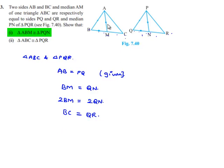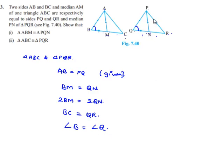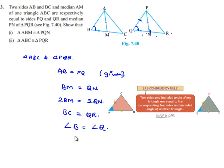Next, angle B is equal to angle Q, since we proved the congruency of triangle ABM and triangle PQN, and corresponding angles of two congruent triangles are equal. Therefore, by the Side-Angle-Side (SAS) property, triangle ABC is congruent to triangle PQR.